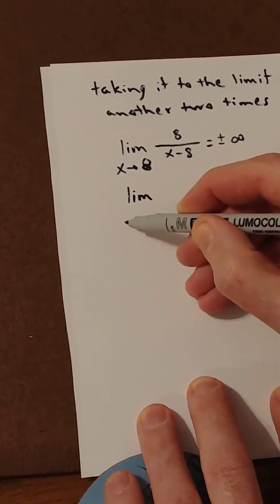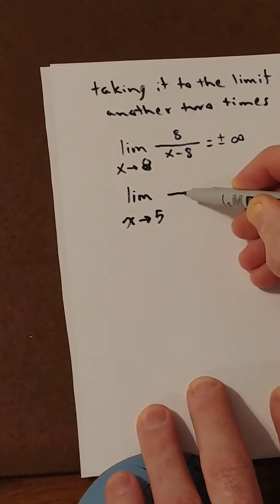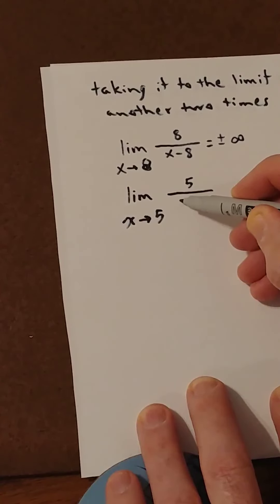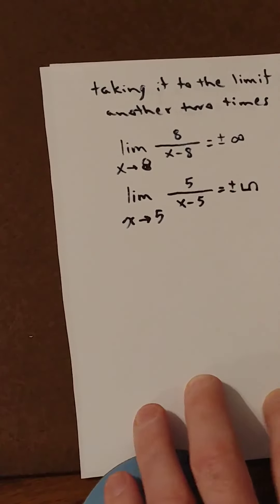But, just to make sure you understand that, what if I change it so that it's the limit as x approaches, okay, let's say 5 over x minus 5. Same thing? No. Be careful. That would be plus or minus. Gotcha.